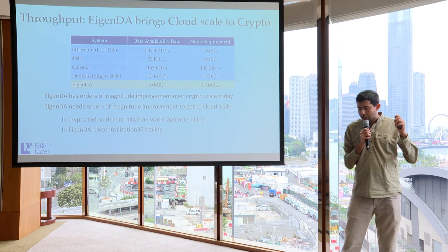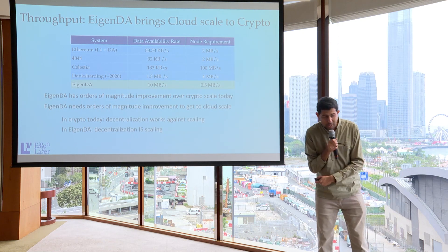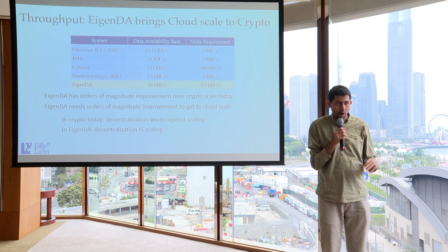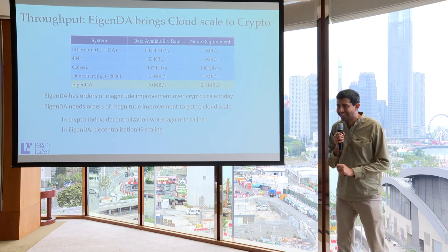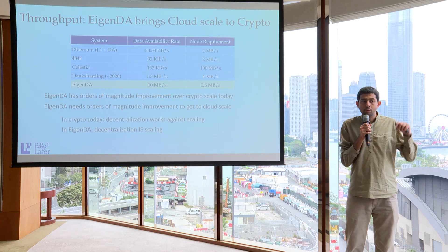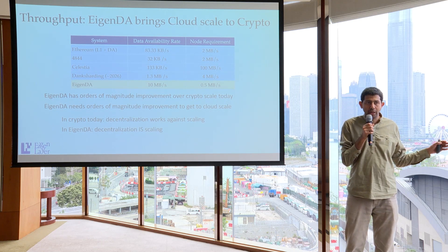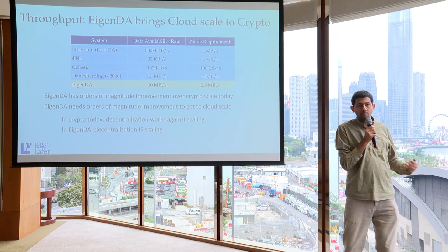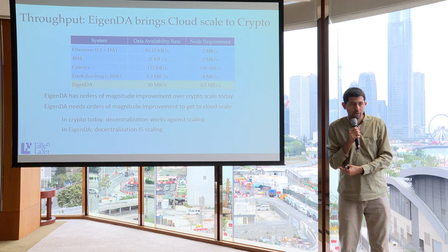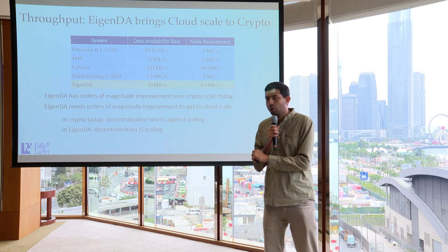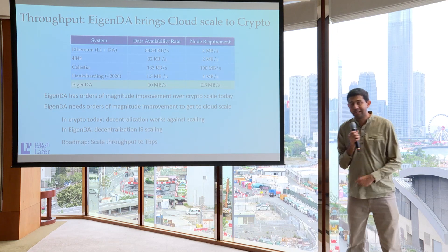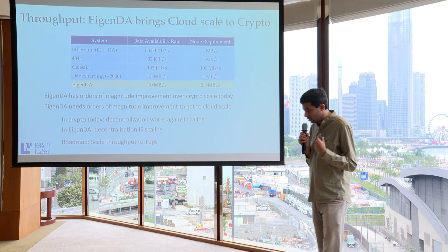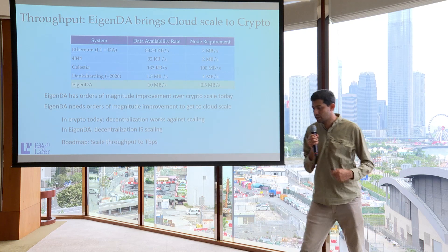The reason is, in crypto today, decentralization works against scaling — if you want to be more decentralized, you lose scale because you have to reduce node requirements. In EigenDA, decentralization IS scaling, because we horizontally scale. The total bandwidth of EigenDA is the sum total of all node bandwidth. You can have nodes with more bandwidth, or just have more nodes. Our goal is to scale this to potentially terabytes per second — that's the theoretical throughput available on Ethereum, where you have millions of nodes each having one megabyte per second.